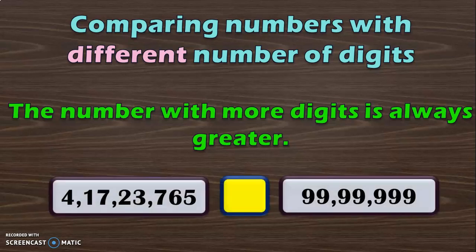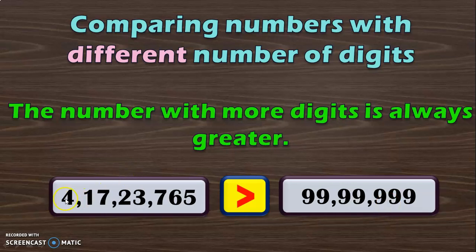Here, as we are in class 5, we are dealing with 7 and 8 digit numbers. I have given you an 8 digit number and a 7 digit number for comparison. So it is visible that an 8 digit number which is 4 crore 17,23,765 is greater than 99,99,999.